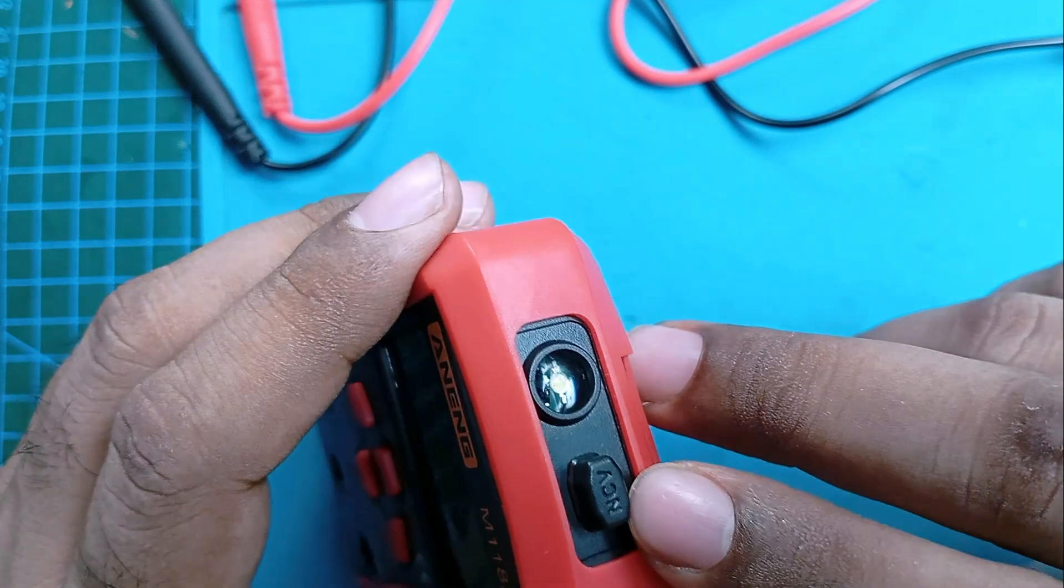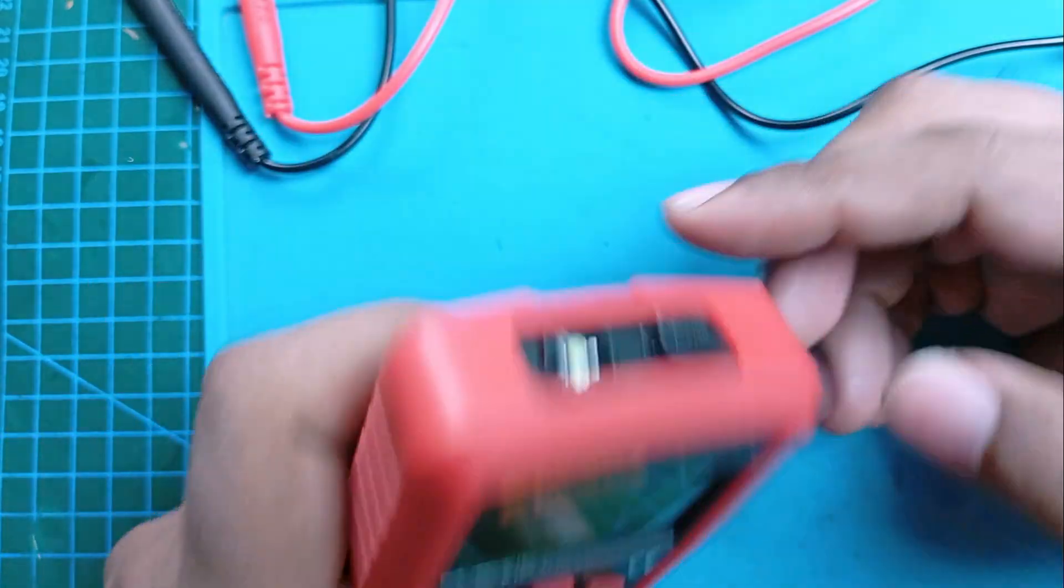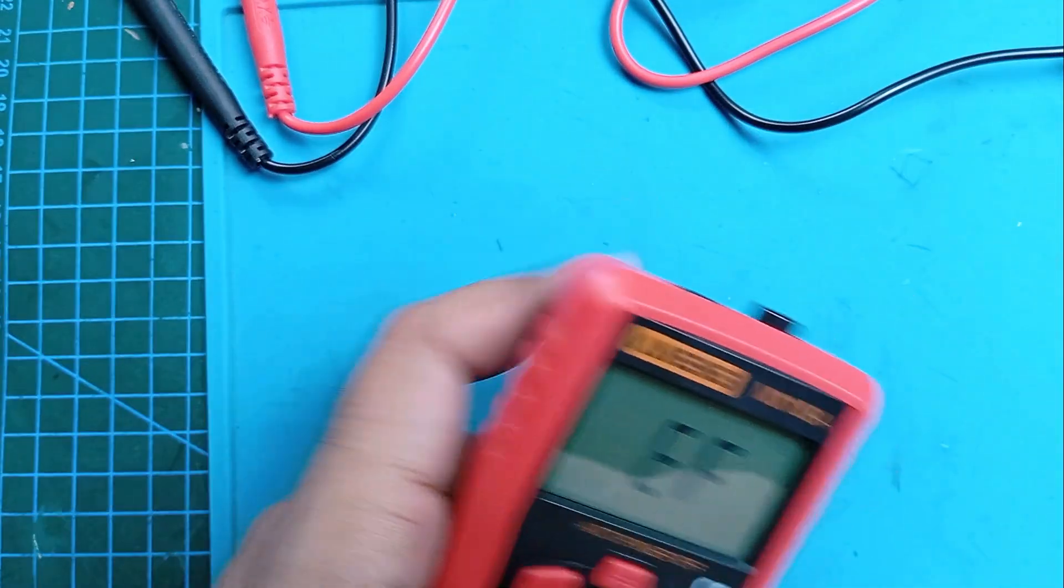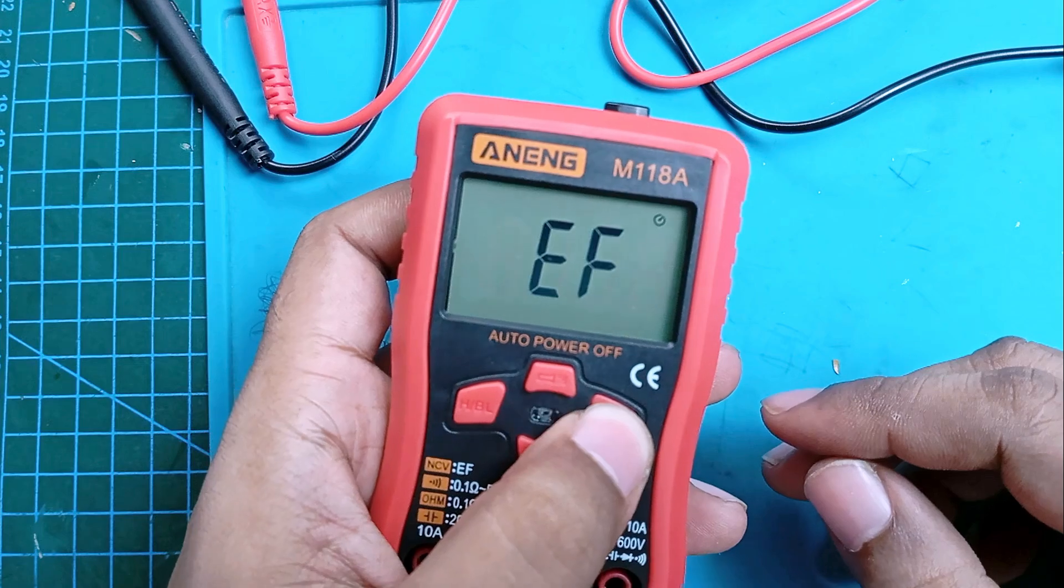For NCV mode, power on, press the NCV button, and you can see if your wire has electricity or not. If it has electricity, then the device will beep like this.